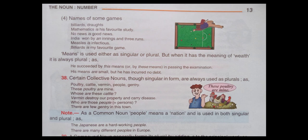Certain collective nouns, though singular in form, are always used as plurals, as: poultry, cattle, vermin, people, gentry. These poultry are mine. Whose are these cattle? Vermin destroy our property and carry disease. Who are those people? There are few gentry in this town. As a common noun, people means a nation and is used in both singular and plural, as: The Japanese are a hard-working people. There are many different peoples in Europe.